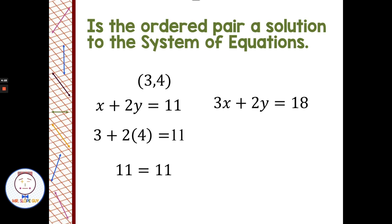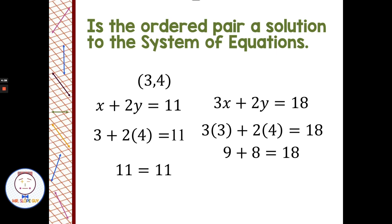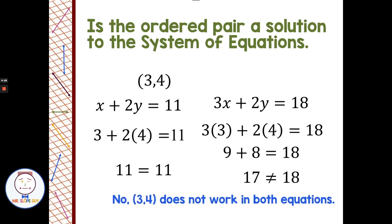Let's try the second equation: 3x + 2y, so 3 times 3 plus 2 times 4. We multiply first: 9 + 8 = 17, but 17 does not equal 18. The ordered pair (3, 4) did not work in the second equation, so it is not a solution to the system — even though it worked in one equation, it must work in both to be a solution.